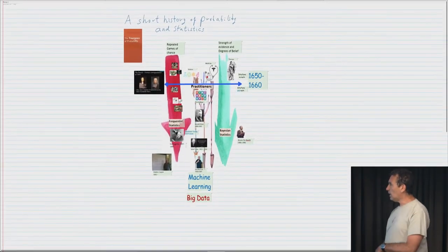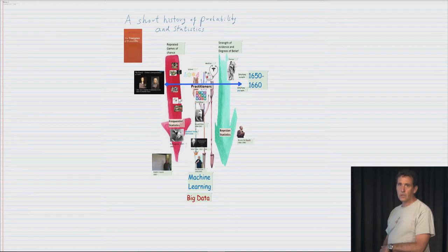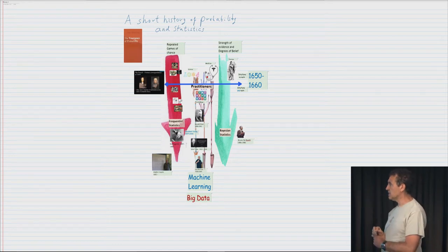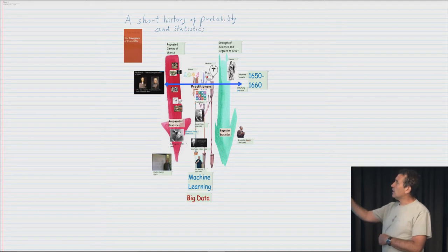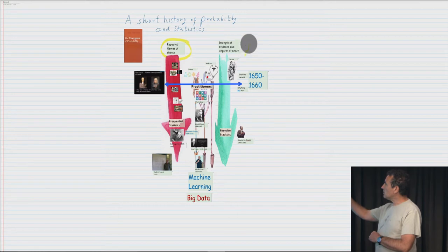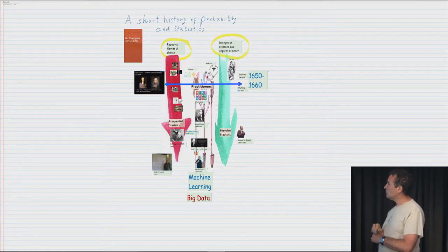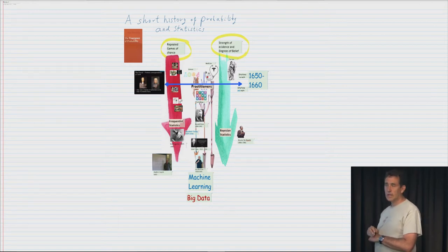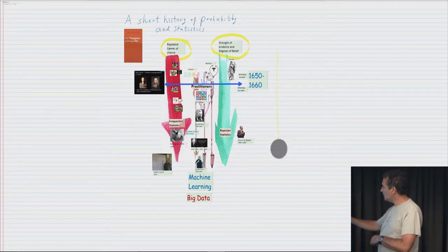So as we said in the last video, there are two parts to probability and statistics. The two threads are repeated games of chance on the one hand and the strength of evidence and degrees of belief on the other. So that's the two arrows, the red one going down and the green one going down. And time goes in this direction.